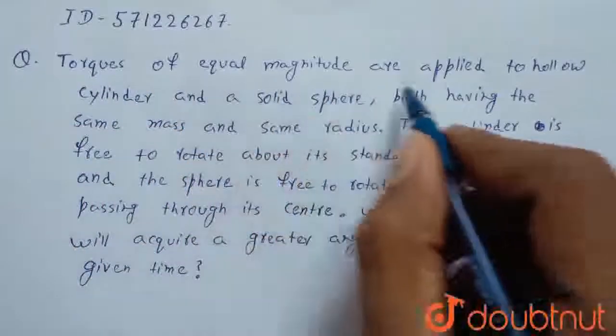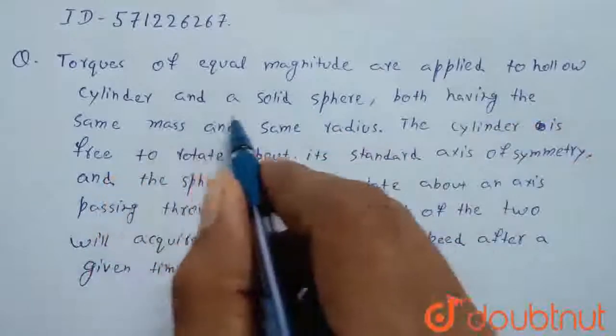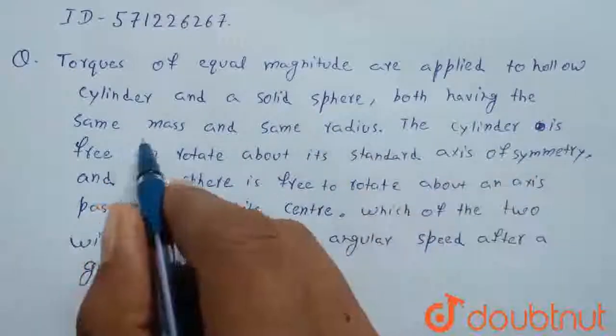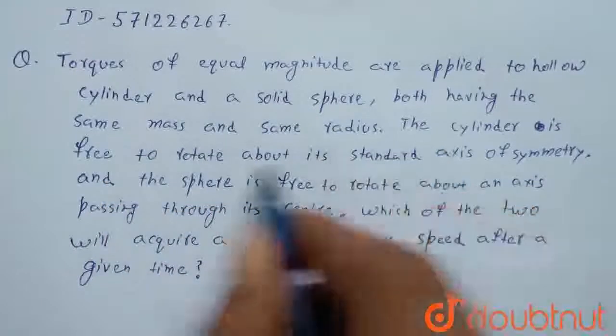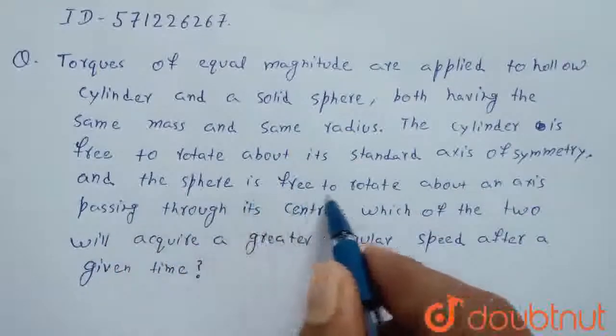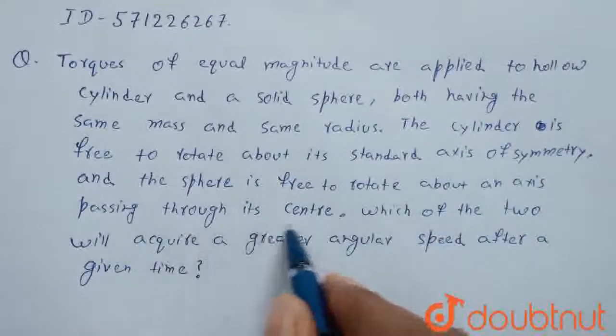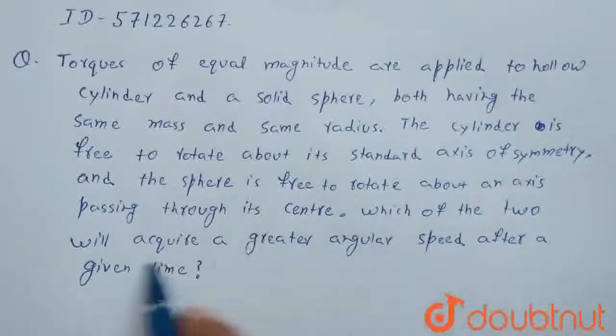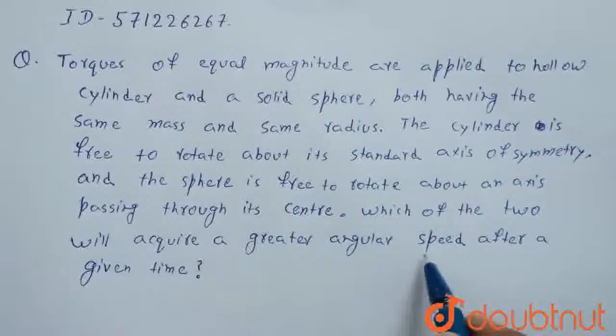Torques of equal magnitude are applied to a hollow cylinder and a solid sphere, both having the same mass and same radius. The cylinder is free to rotate about its standard axis of symmetry, and the sphere is free to rotate about an axis passing through its center. Which of the two will acquire a greater angular speed after a given time?